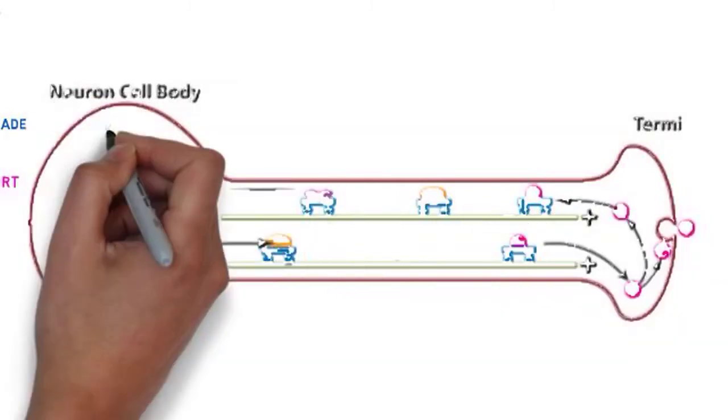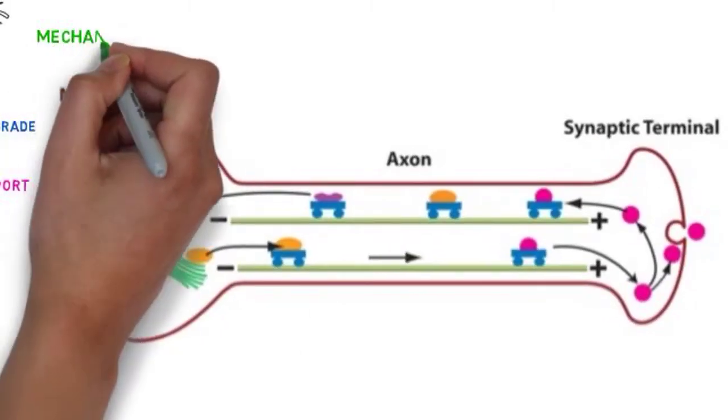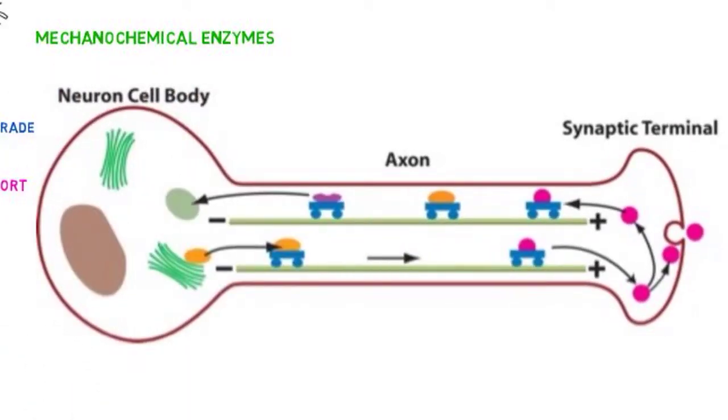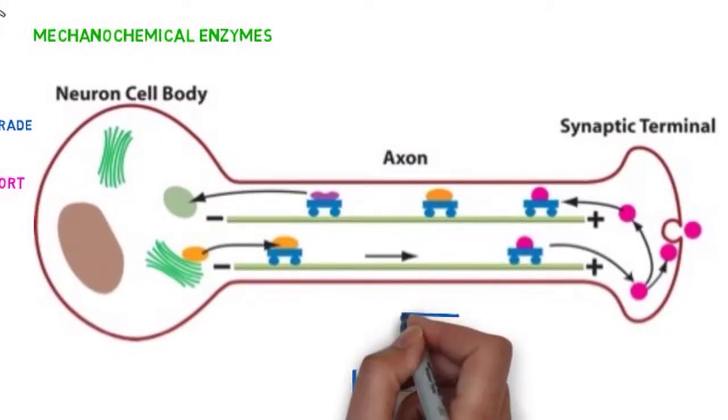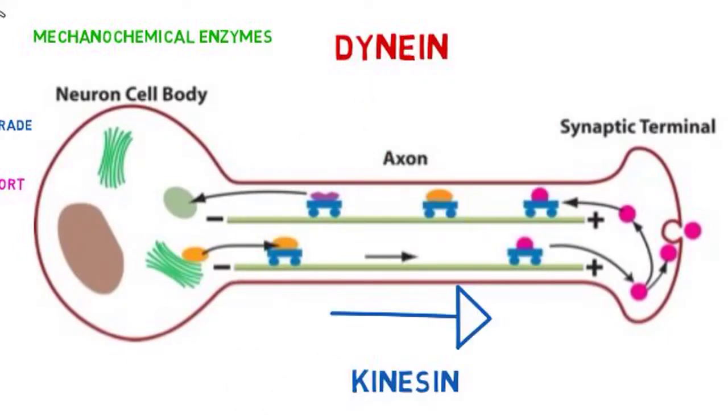Anterograde and retrograde transport are mediated by mechanochemical enzymes, which move cargos and transport vesicles or lysosomes in either direction along the microtubules which form the cytoskeleton of the axon. Kinesin carries cargo in the anterograde direction. Dynein carries cargo in the retrograde direction.